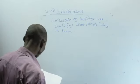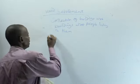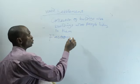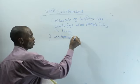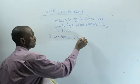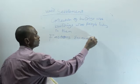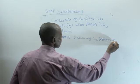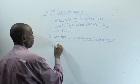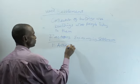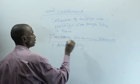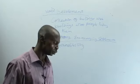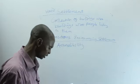Now let's look at factors that encourage settlement — what motivates people to settle in an area? Factor number one: we talk about accessibility. When the place is accessible to people, it can draw people to come and settle there.